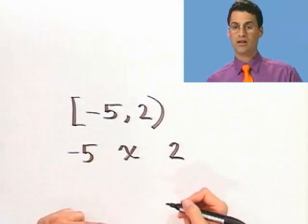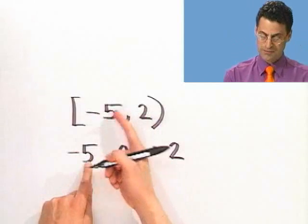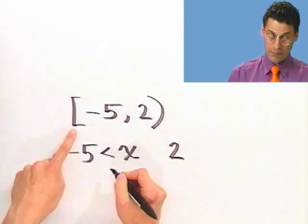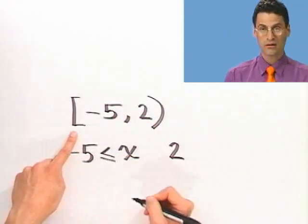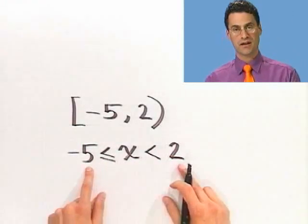And how should the inequality signs go? Well, the values are going to be always bigger than minus five but possibly equal, but always strictly smaller than two. And so that's how you would write that. So you can now convert from here to here and from here to here.